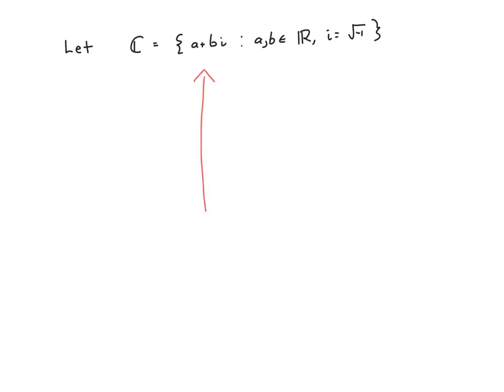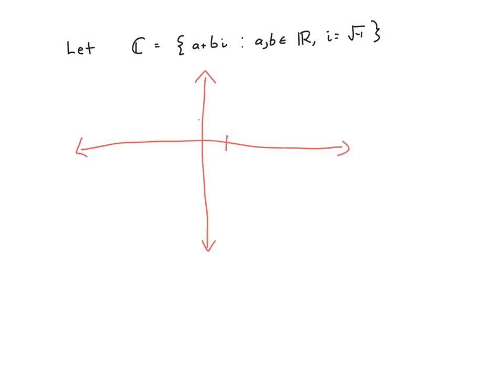And we're not going to use it much in this video but it's worth pointing out that one way to think of complex numbers is as points in two-dimensional space where the real part a is your x coordinate and the imaginary part b is your y coordinate.